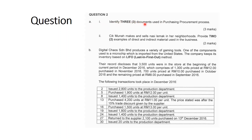Identify 3 documents used in the purchasing procurement process. A2: Cik Munah makes and sells Nasi Lemak in her neighborhood — provide two examples of direct and indirect material within the business.